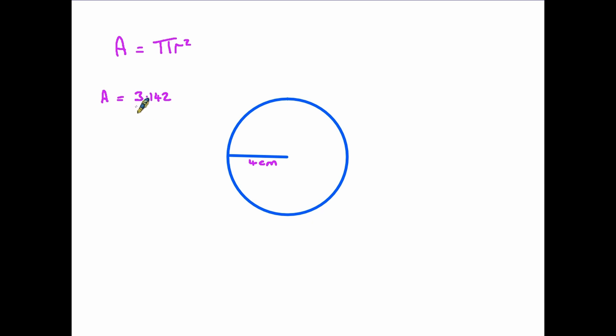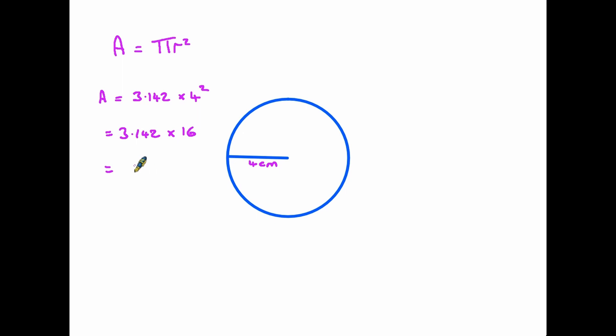On a calculator, if you press the π button, you'll get a much longer decimal, but we only need to use 3.142 in a GCSE exam. That is going to be multiplied by the radius, which is 4, and that's squared. So it's 3.142 times 16, and this gives us an answer of 50.272. Because we are working out area, it's centimeters squared.